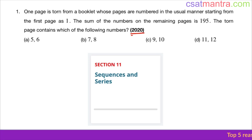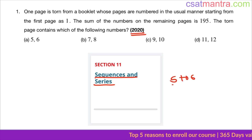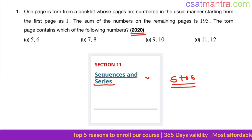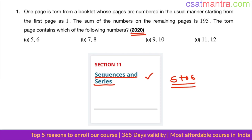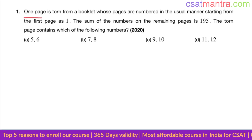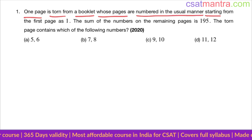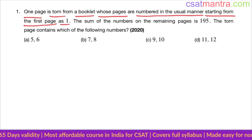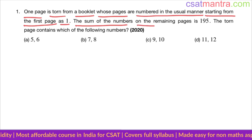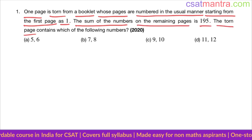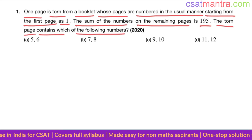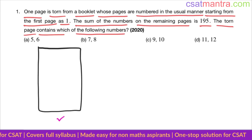Namaskaram. This question is asked in 2020, based on the sequences and series chapter — a very important chapter. Every year five to six questions will be asked. If you are running out of questions, look for sequences and series questions; they will be easy and help you to qualify. The problem: one page is torn from a booklet whose pages are numbered in the usual manner starting from one. The sum of the numbers on the remaining pages is 195. The torn page contains which of the following numbers?